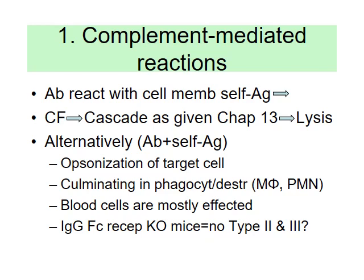Many times the antibodies will attach to self-antigens — that's a keyword — and cause opsonization of the target cell. They coat it up and make it presentable or palatable for phagocytes. These phagocytes — the big eaters — are macrophages and polymorphonuclear neutrophils. Sometimes they can pick up antigens on blood cells. If red blood cells have an antigen that gets opsonized by complement, phagocytes will come, chew up your own red blood cells, and then you will have anemia.